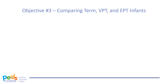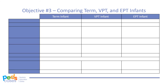Premature infants vary considerably from term infants in size, appearance, and development. While the average birth weight of a term infant is 3,500 grams, a very preterm infant weighs about 1.5 kg on average, and an extremely preterm infant weighs 0.7 kg on average. Other characteristics that vary include skin, genitalia, posture, vision, hearing, breathing, sucking and swallowing, and their sleep and wake cycle.